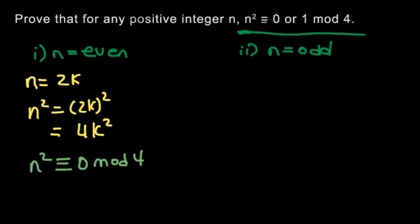So let's do the same thing for the second case. The second case is when n is odd. And when n is odd, we can rewrite this in terms of k as n equals 2k plus 1. It doesn't matter which one you use.